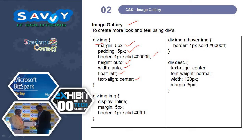For div.image img — image inside another image — display is inline, margin is 5px, border is 1px solid white. For div.image:hover img, the border is 1px solid a specified color. Then for div.description, we also give a description to the image.